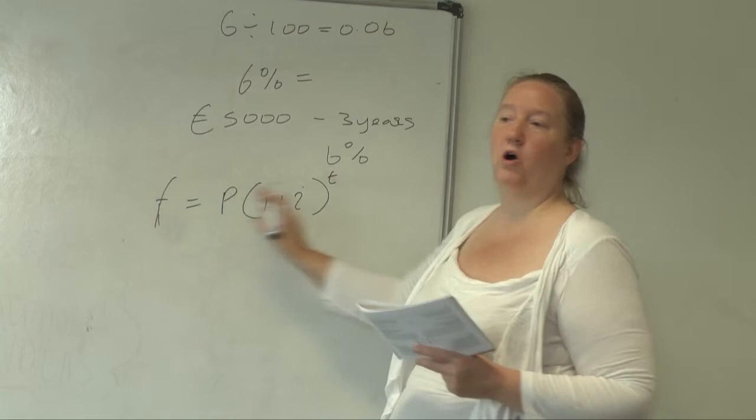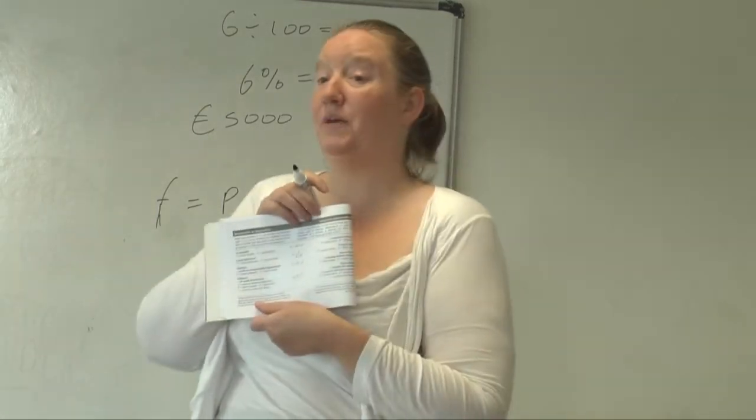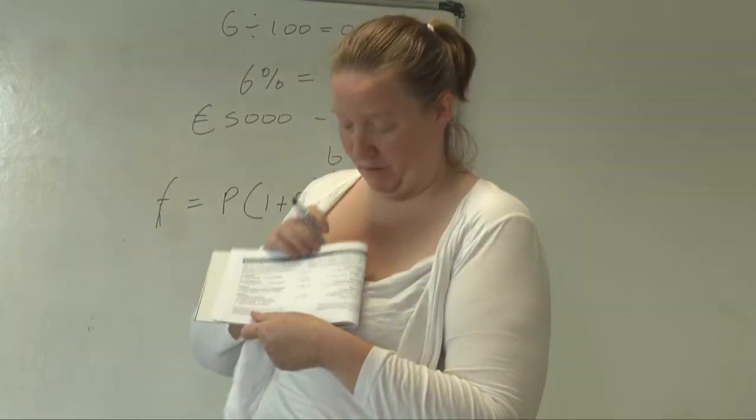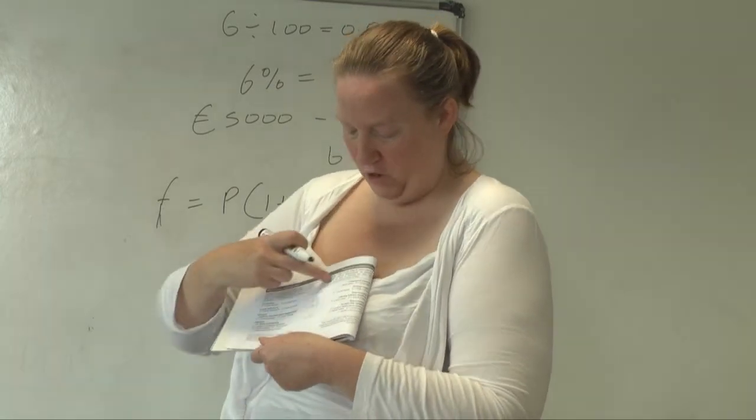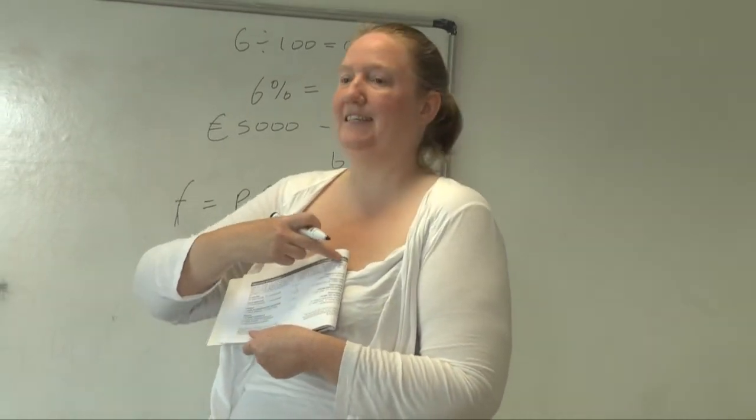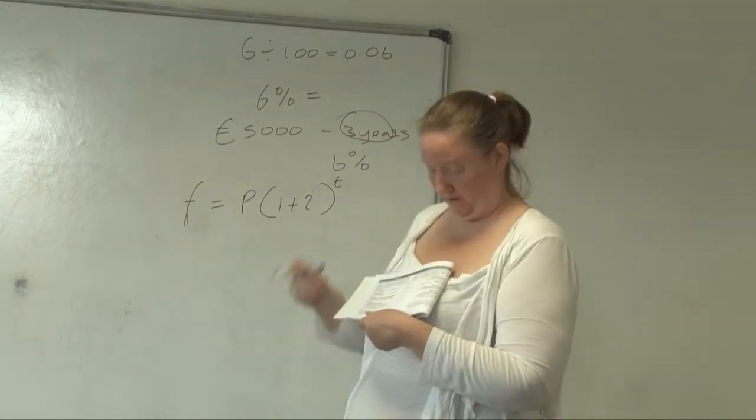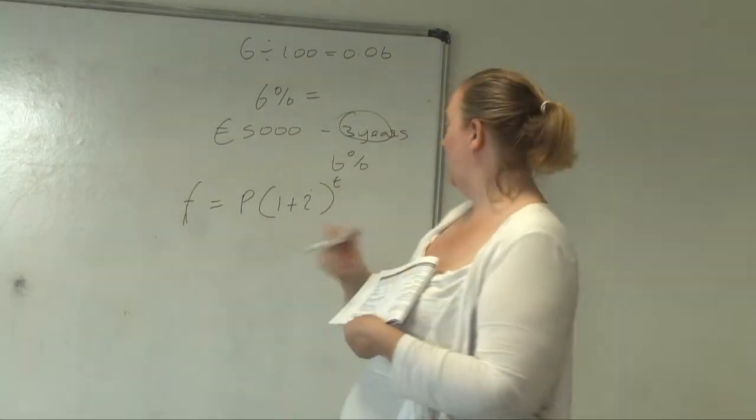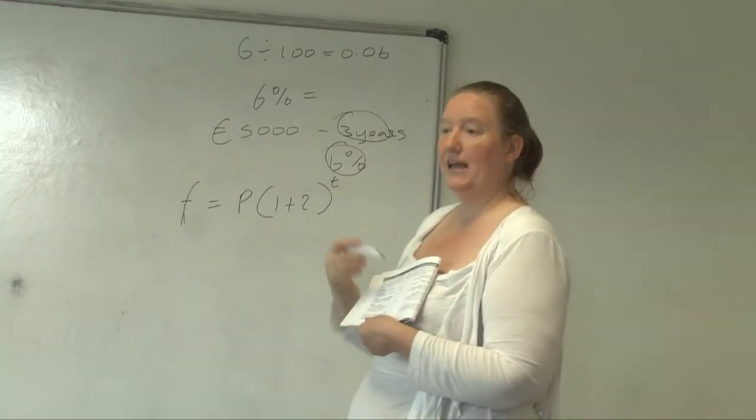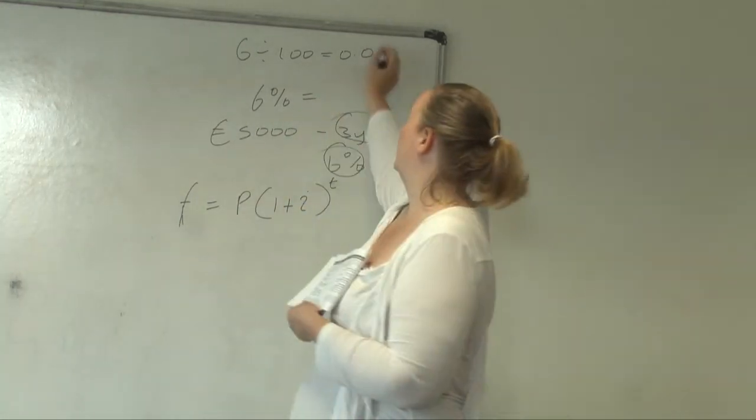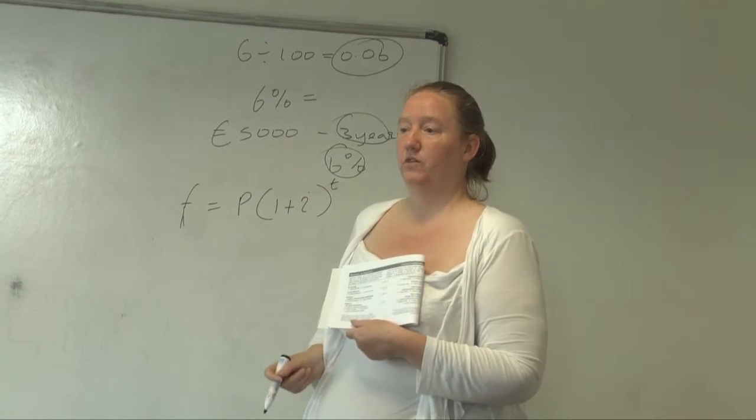So, that's what you want. And if you can't remember what all those letters stand for, it actually tells you up here. There's a little paragraph up here that tells you, in all of the following, T is the time in years. So, it's going to be 3. And I is the annual rate of interest. That's going to be 6%. Expressed as a decimal. You've done that there.